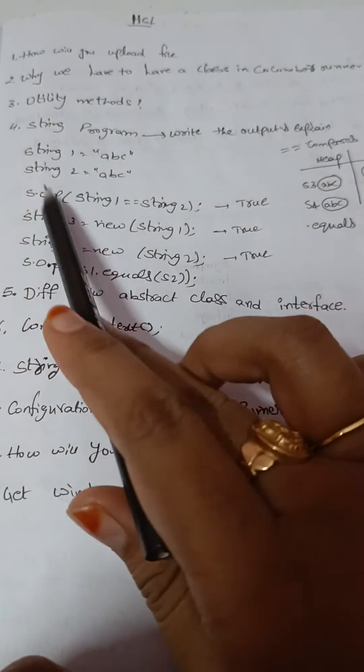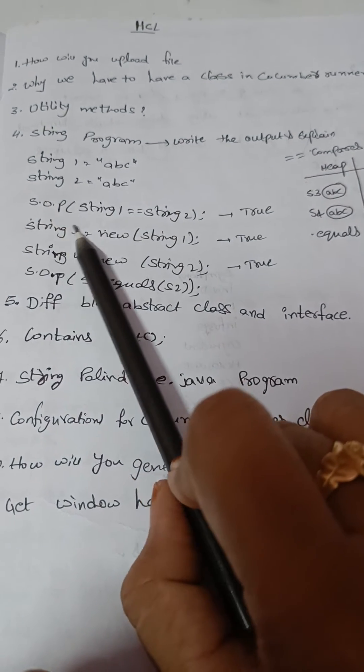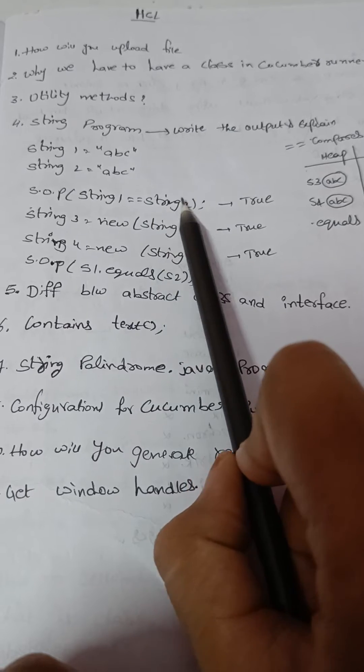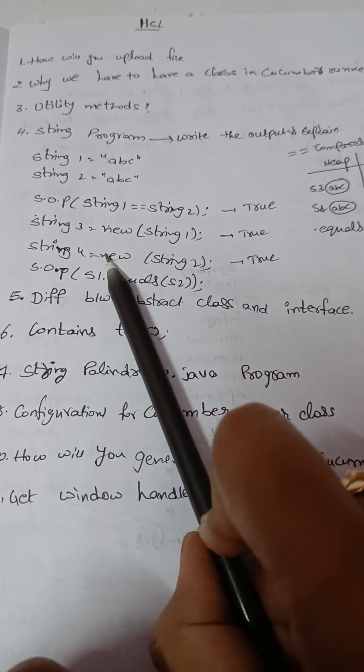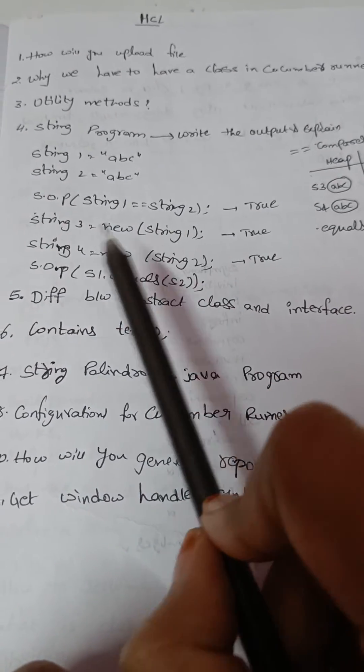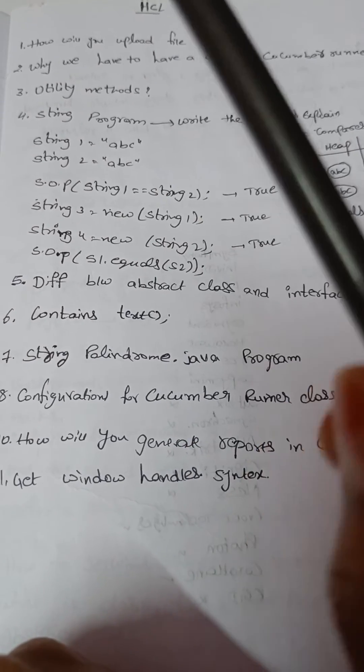So this is the string program. String 1 equals to in double quotes ABC. String 2 equals to ABC. And in system.out.println s1 equals to s2. And s3 equals to new string of 1. String 4 equals to new string of again string 2. So and sop s1 dot equals s2. So we have to write out for this.